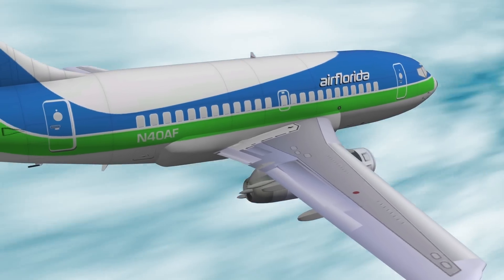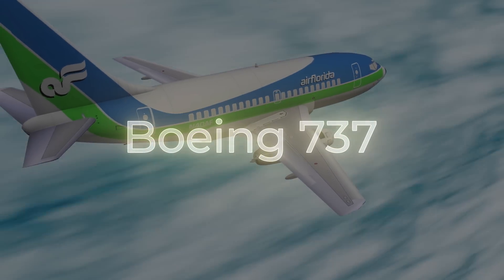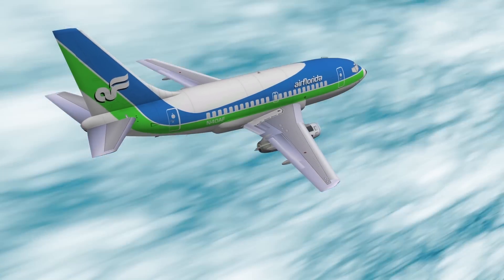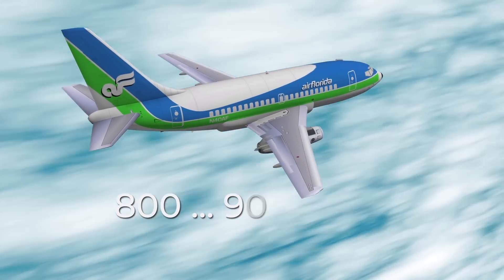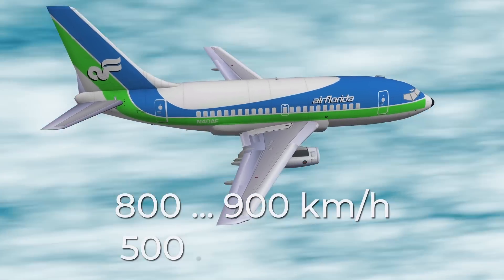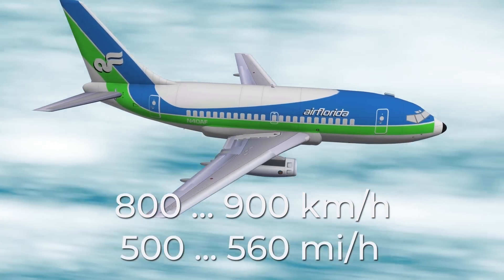For comparison, a normal civilian Boeing 737 can reach speeds of about 800 or 900 kilometers per hour. That's about 500 to 560 miles per hour. That's four times slower.